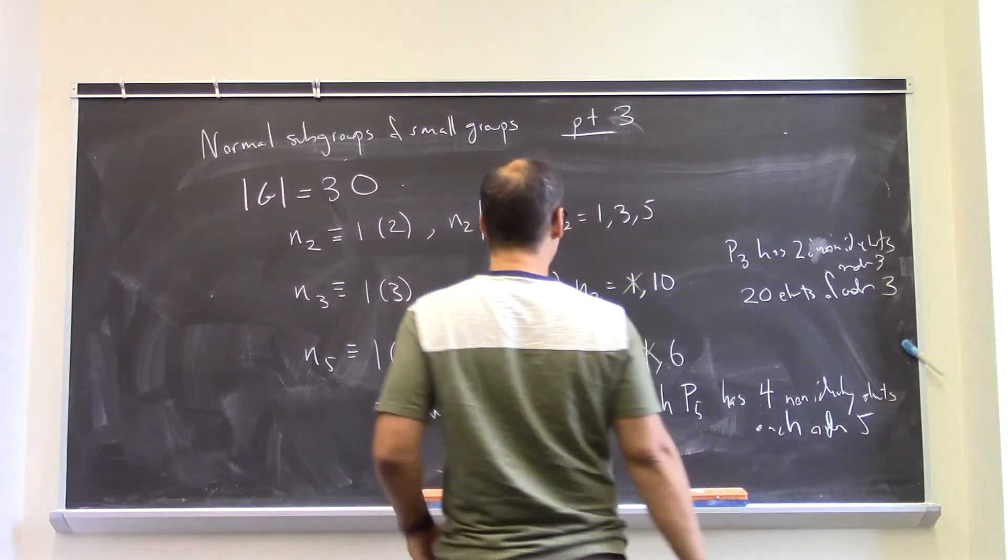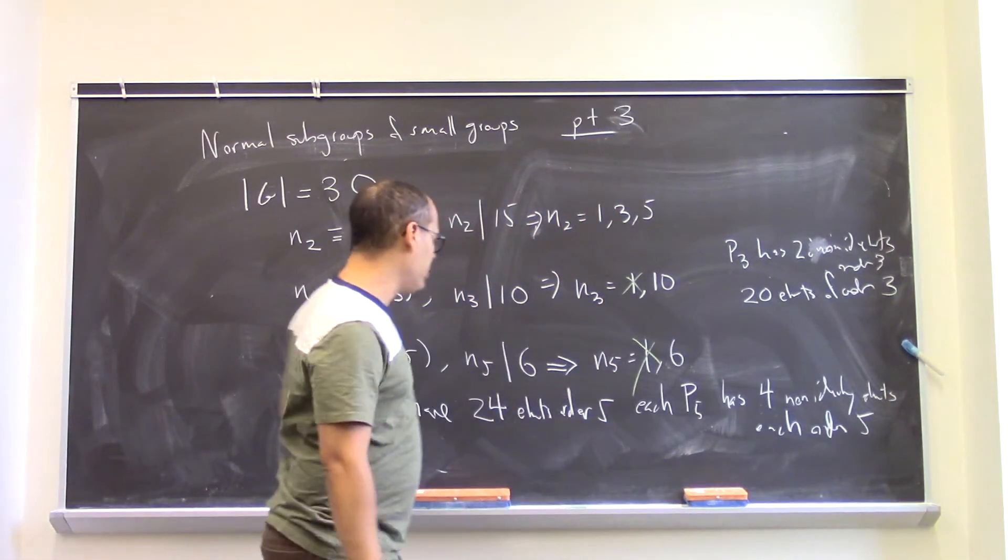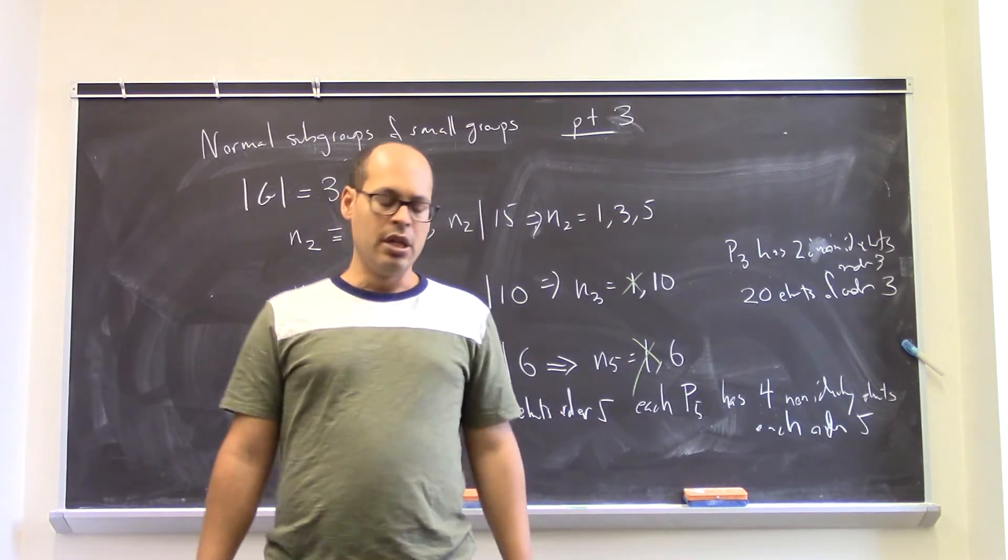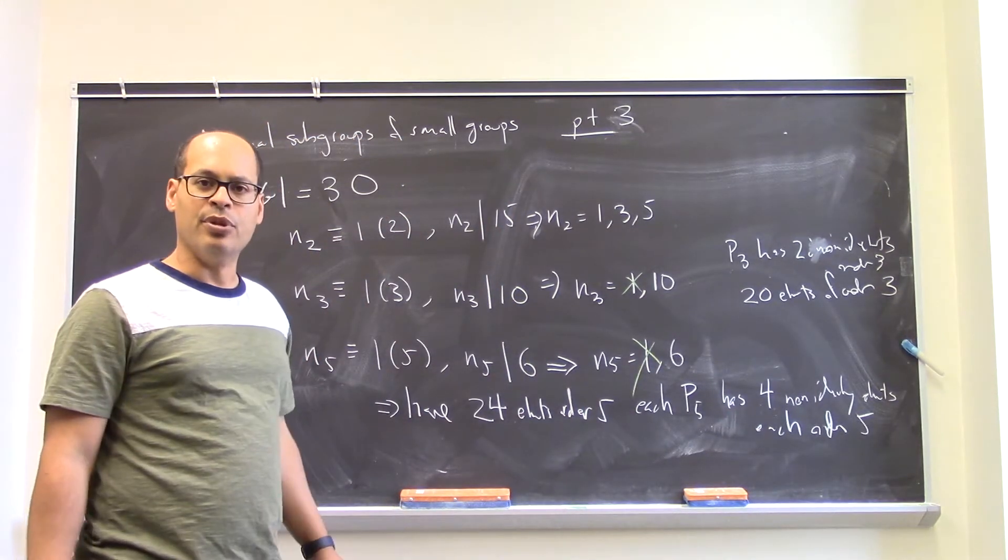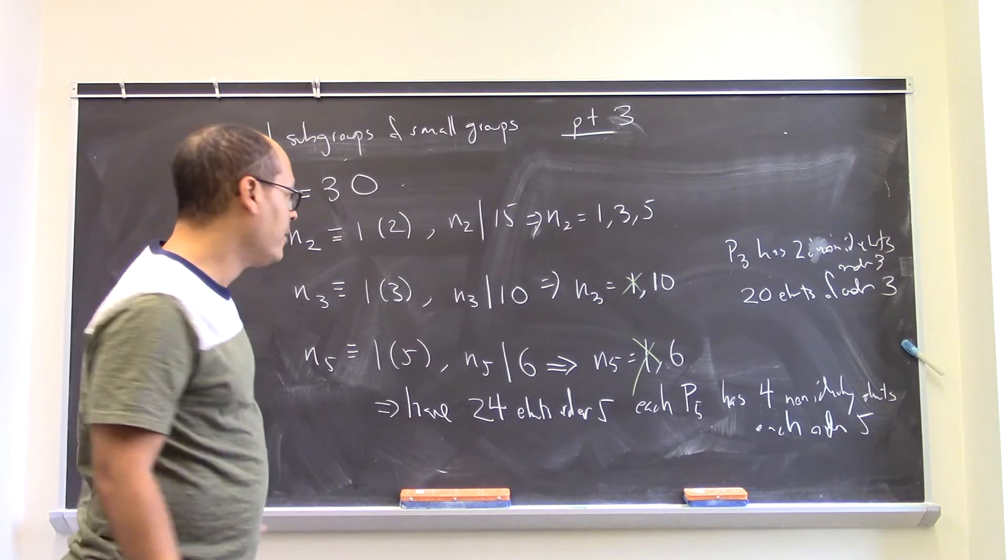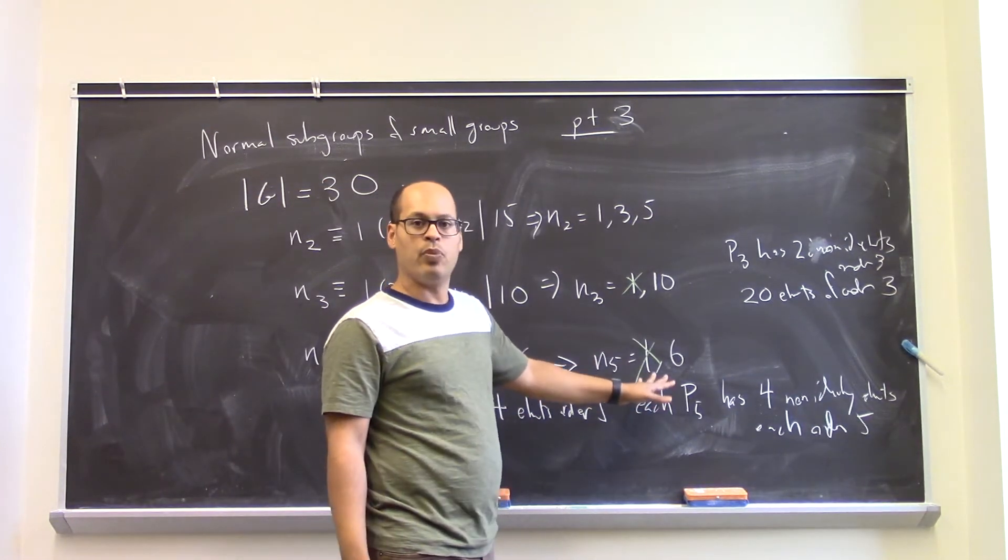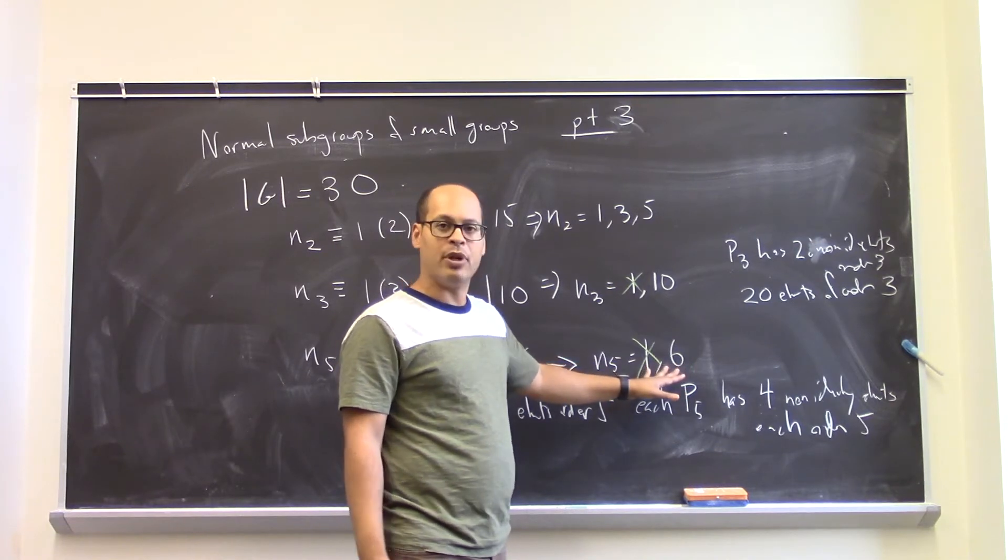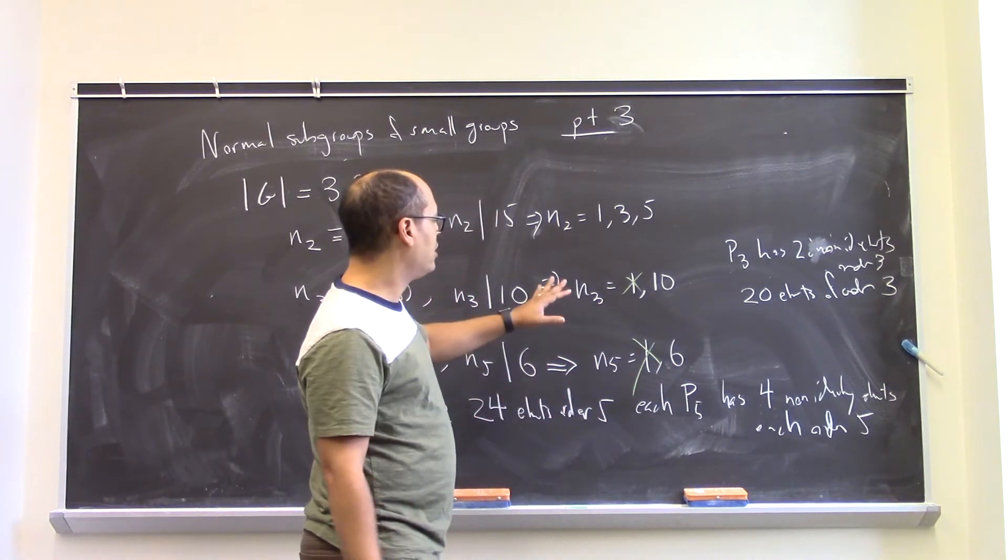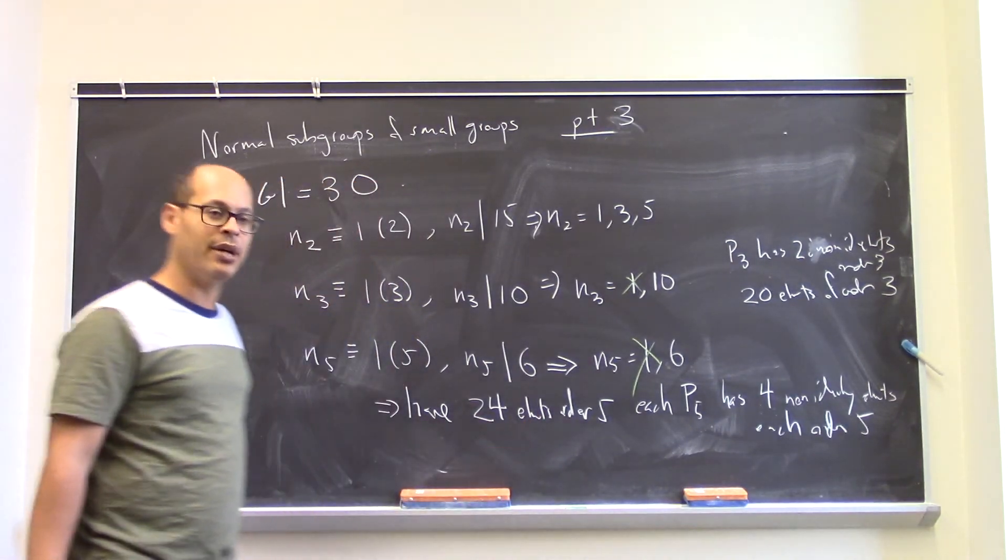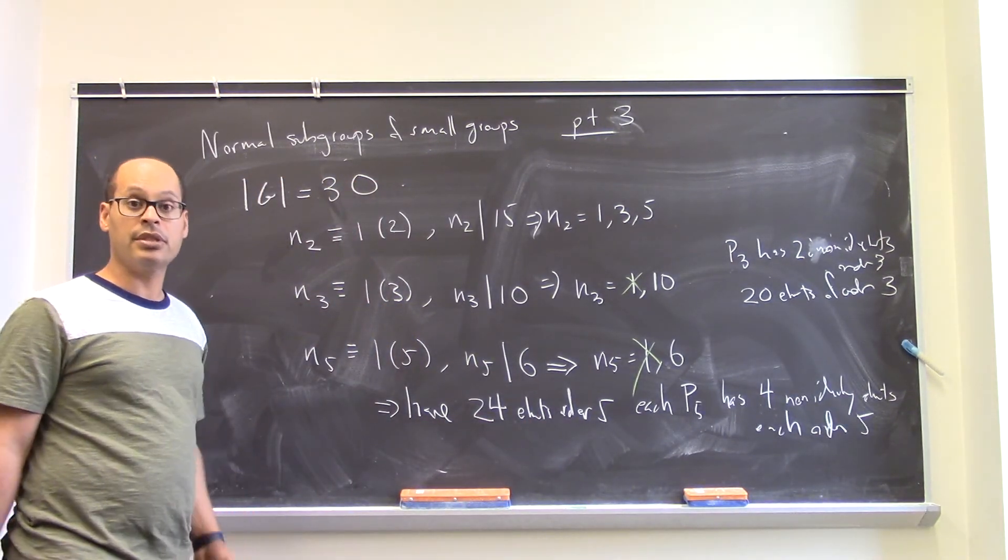So assuming that these are both not 1, I would have 24 elements of order 5 and 20 elements of order 3, but there's only 30 elements in the group. So that can't happen, right? But consequently, you know that both of these can't both not be 1. So either the 3-Sylow is normal or the 5-Sylow is normal. And there we go. We have a normal subgroup in both those cases.